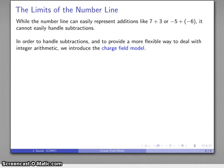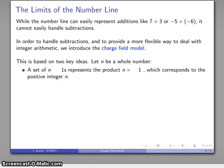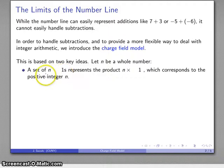A more flexible way of handling and representing integer arithmetic is known as the charge field model. This is based on two key ideas. Suppose n is a whole number. A set of n ones, by the definition of multiplication, is n times one, and that's going to correspond to the positive integer n.